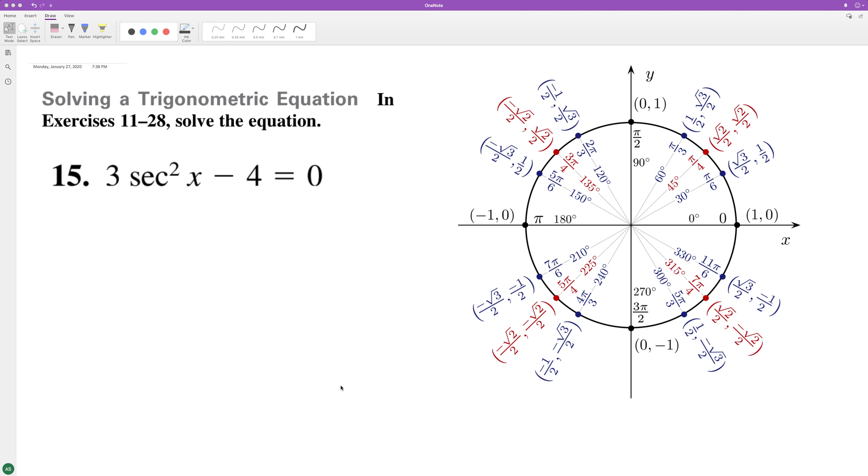The solution for this: first we'll move the 4 over, divide 3 by the 3, and take the square root. So we end up with 2 over the square root of 3.